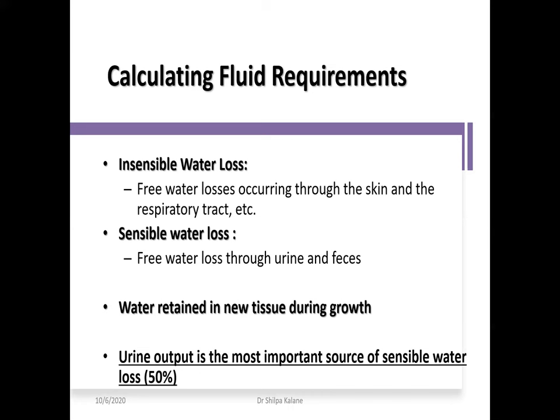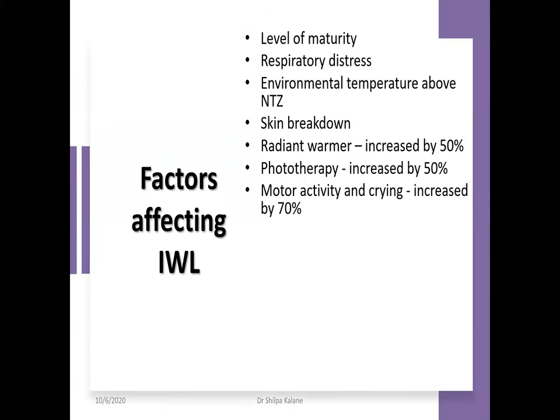In units, urine output is the most important source of sensible water loss. For a preterm baby, the major component of insensible water loss is through the skin and then the respiratory tract. Factors affecting insensible water loss include: level of maturity — a more immature baby has more insensible water loss due to delicate skin; respiratory distress — increasing respiratory rate increases insensible water loss; and environmental temperature above thermoneutral zone.